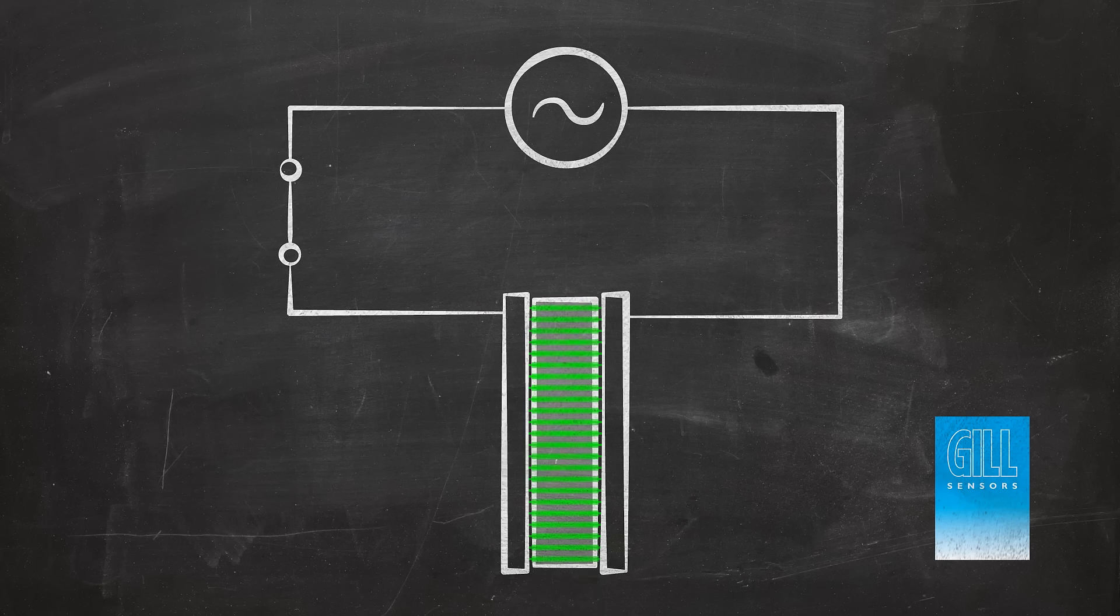By placing non-conductive material between the electrodes, the ability for the capacitor to store energy increases, and so the capacitance increases. This material between the electrodes is referred to as the dielectric.